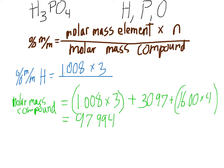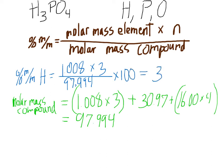The molar mass of H₃PO₄ equals 97.994 g/mol. Inserting that into the denominator and multiplying by 100, the percent by mass of hydrogen comes out to about 3%. That's believable — hydrogen doesn't weigh very much.